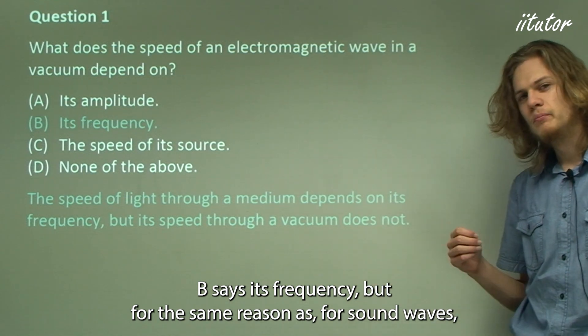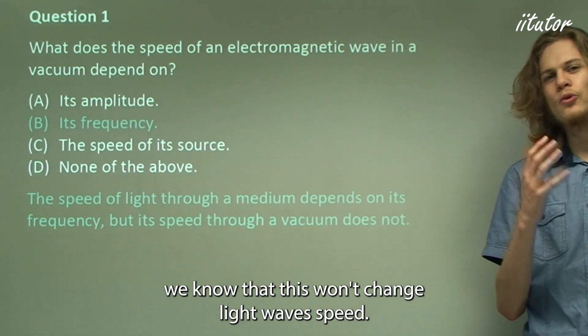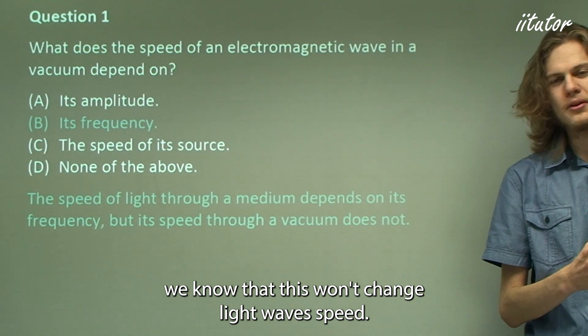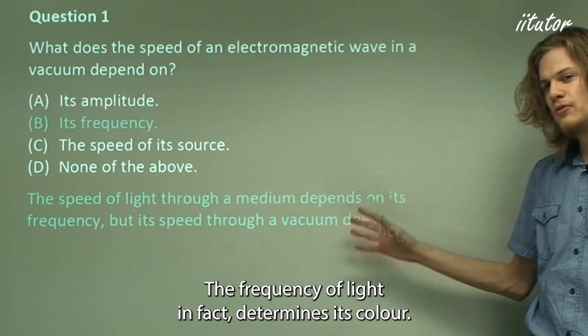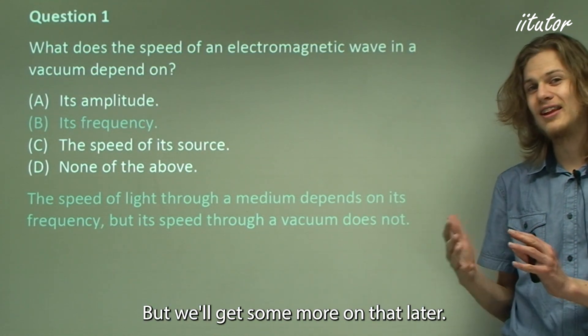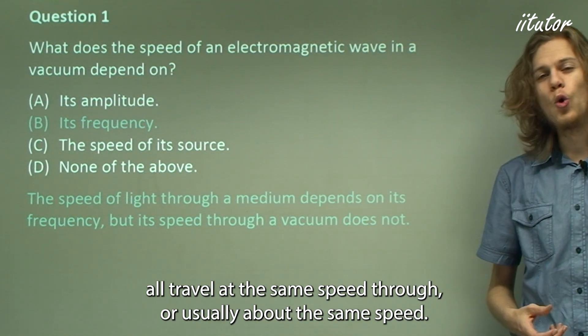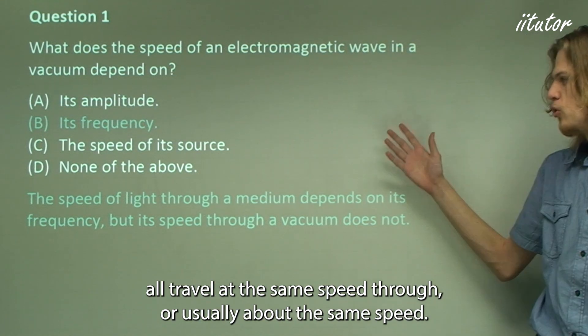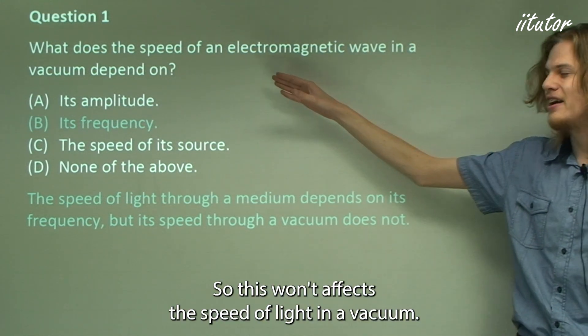B says its frequency but for the same reason as for sound waves we know that this won't change light wave's speed. So remember that the frequency of a sound wave determines its pitch, how high up it is. The frequency of light in fact determines its color, but we'll get some more on that later. The point is different colors of light and different pitches of sound all travel at the same speed or usually about the same speed. So this won't affect the speed of light in a vacuum.